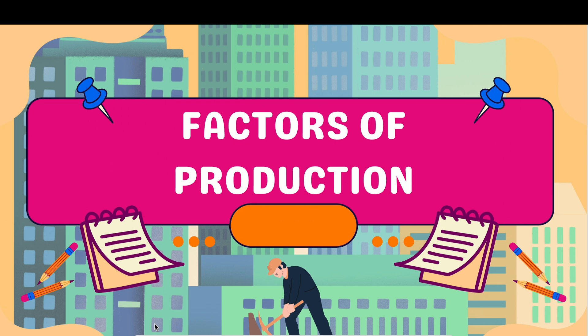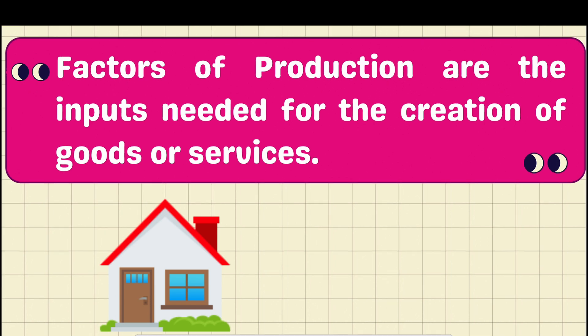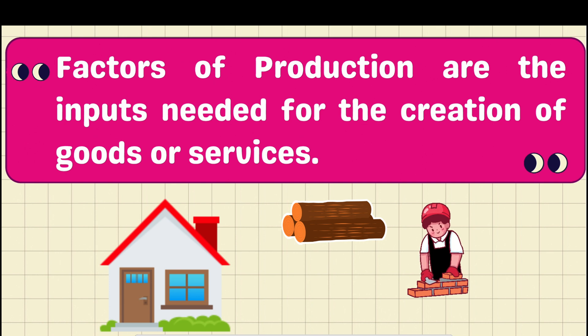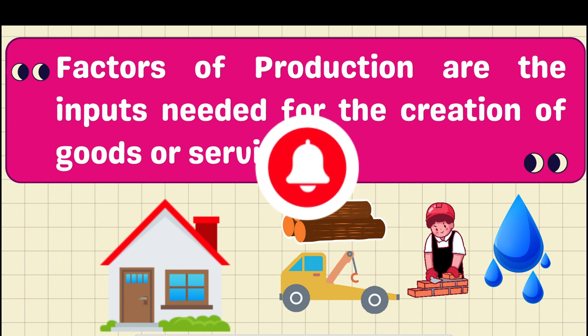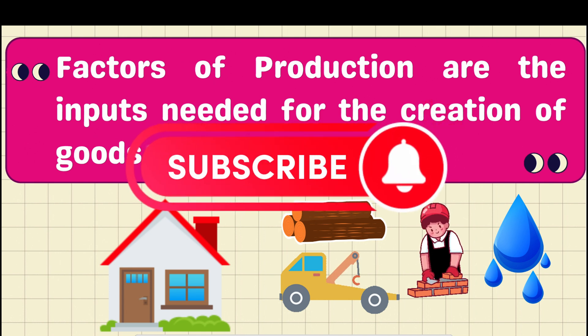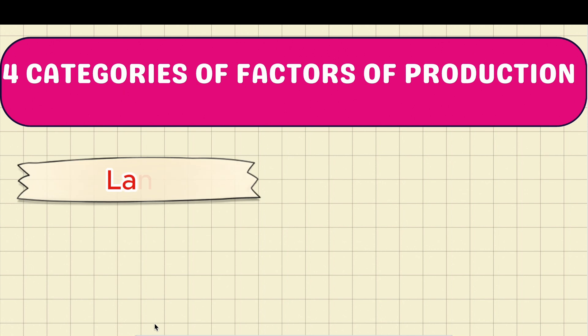Today we will talk about factors of production, specifically focusing on capital and land. Factors of production means all the inputs and resources needed for the production of goods or services. For example, when constructing a house, we need workers, materials like stone and wood, water, and machinery — all of these are called factors of production. We can categorize them into four: land, labor, capital, and enterprise.